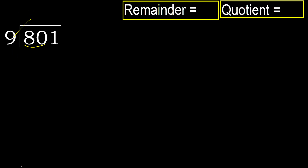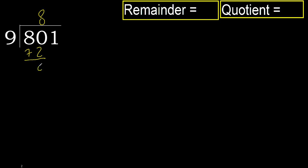9 multiplied by which number is nearest to 80 but not greater? 9 multiplied by 9 is 81, which is greater. Multiplied by 8 gives 72, which is not greater. OK. Subtract: 80 minus 72 is 8.